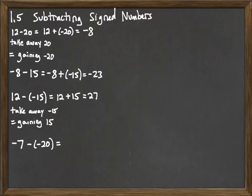Consider this example: negative 7 minus a negative 20. Again, taking away a negative is the same as gaining that amount. So it becomes negative 7 plus 20. And then we can do our addition.